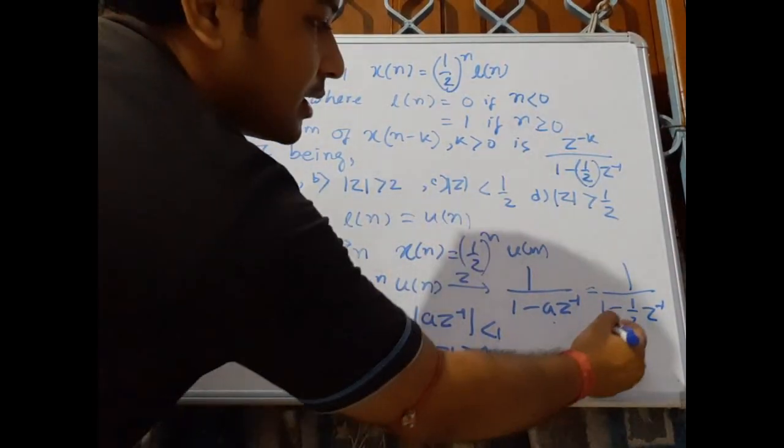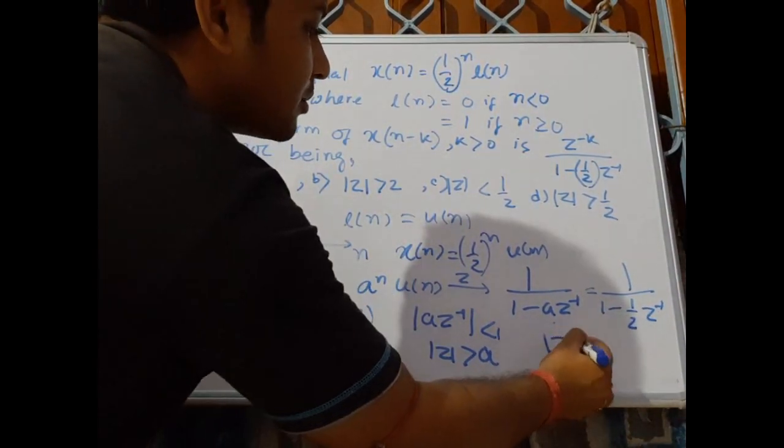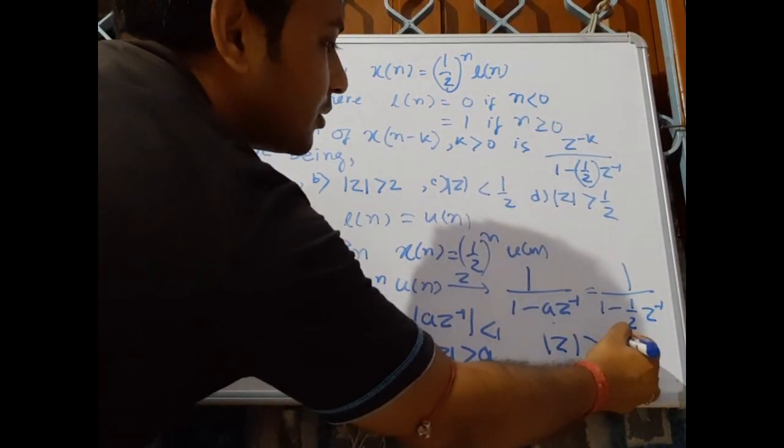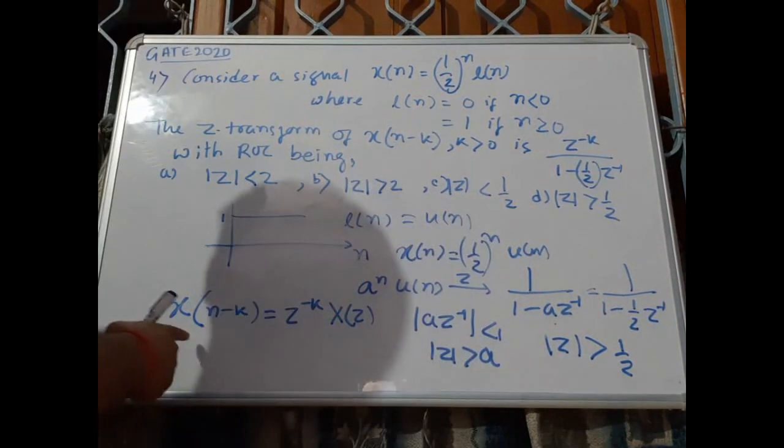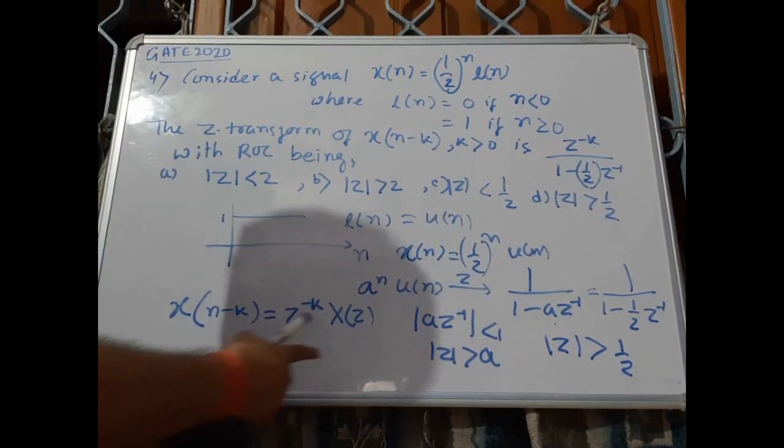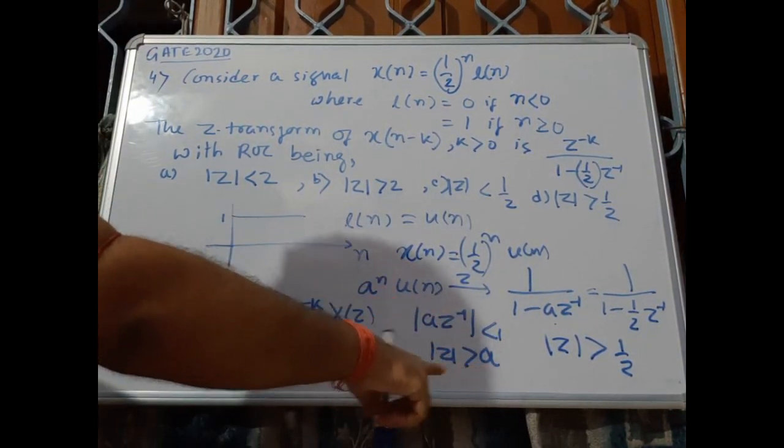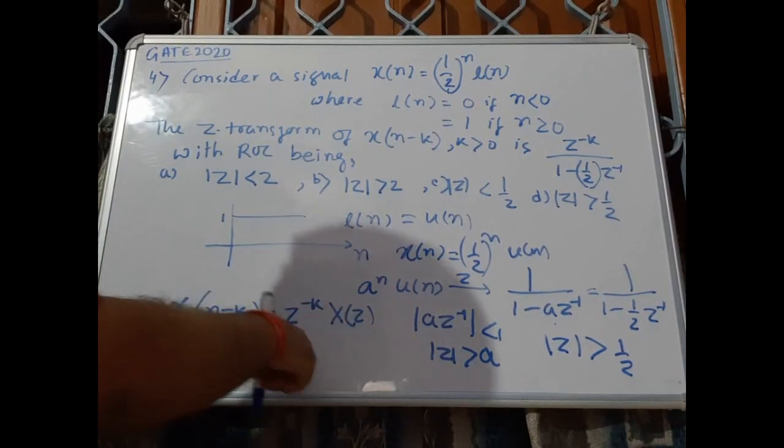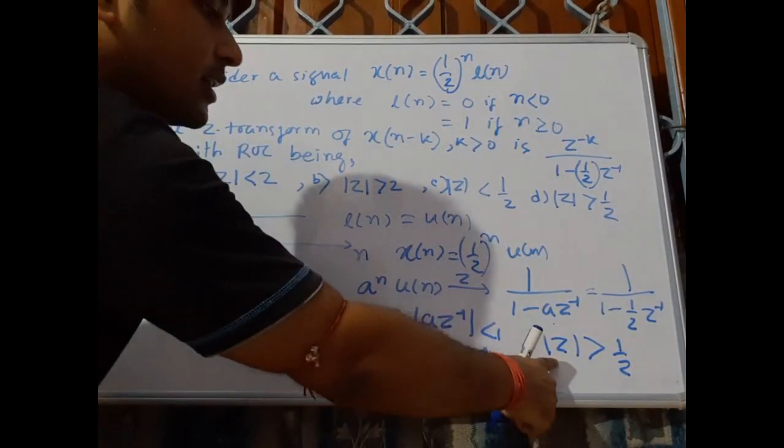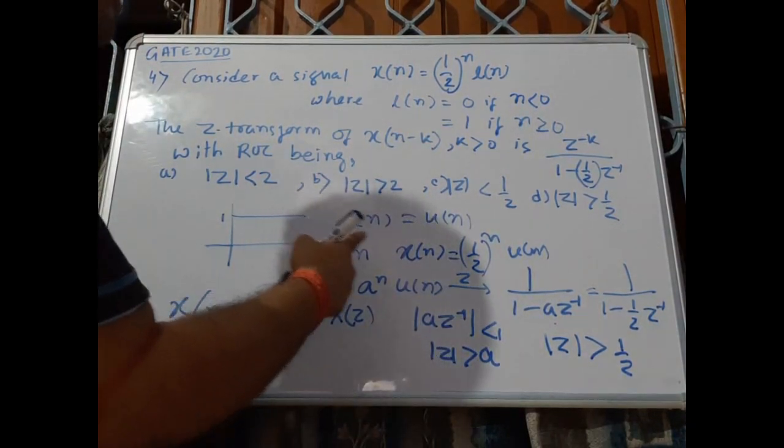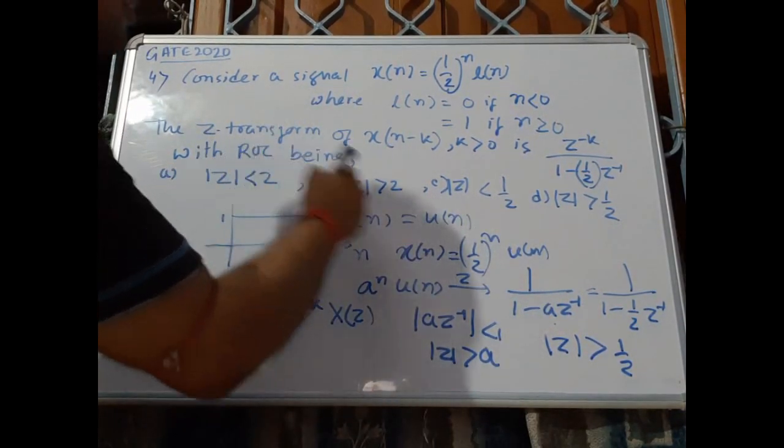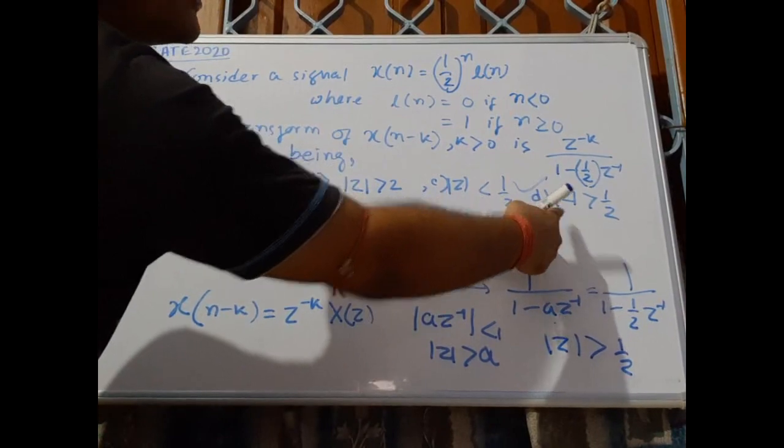But the ROC for this solution will be |z| greater than a, where a means half. When we do this time-shifting operation, the ROC will remain the same. ROC will not change; only the solution will change, but the region of convergence will be the same. So our required solution, the ROC will be option D: |z| greater than half.